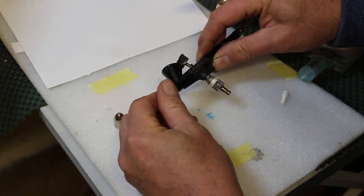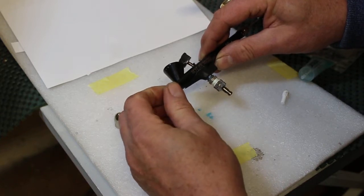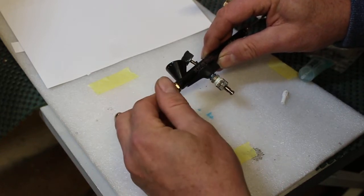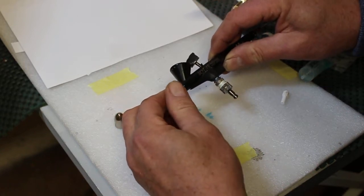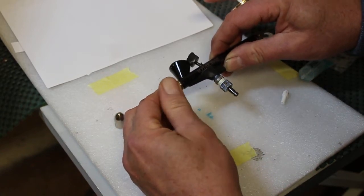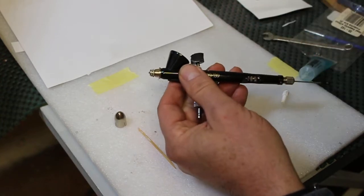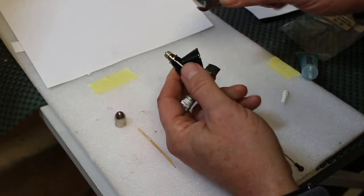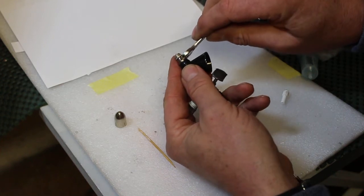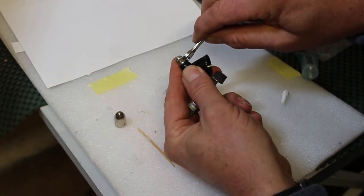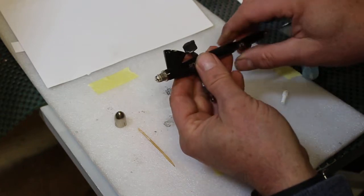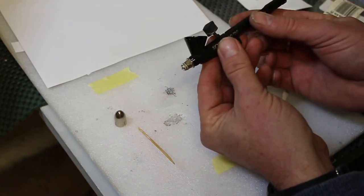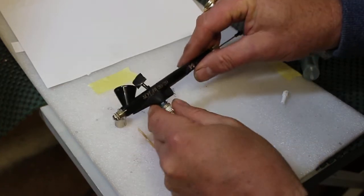Turn it the opposite way till I hear the threads clicking, and then tighten it up. Once I've got that in place and finger tight, I'm now just going to get the spanner, ever so slightly. It doesn't have to go too hard, just past finger tight.